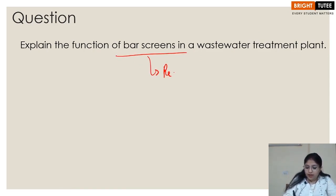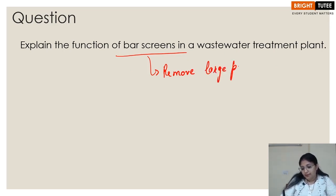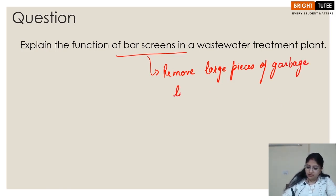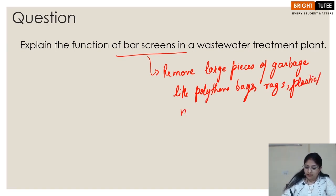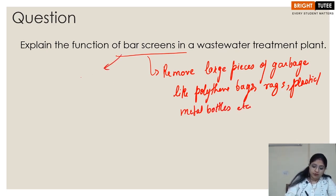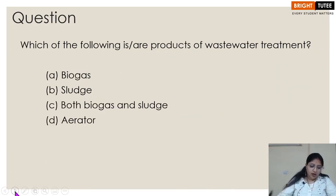The next question is: explain the function of bar screens in a wastewater treatment plant. Bar screens are used to remove large pieces of garbage such as polythene bags, rags, plastic or metal bottles, etc. Basically, they are used for the physical removal of large solid waste.